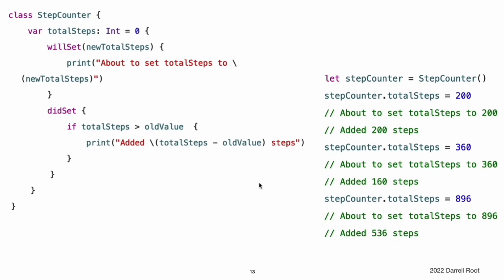The StepCounter class declares a totalSteps property of type Int. This is a stored property with willSet and didSet observers. The willSet and didSet observers for totalSteps are called whenever the property is assigned a new value, even if the new value is the same as the current value. This example's willSet observer uses a custom parameter name of newTotalSteps for the upcoming new value, and simply prints out the value that is about to be set.